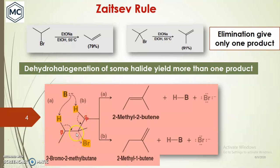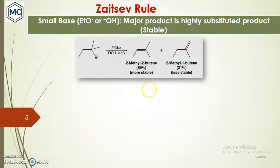In the example of 2-bromo-2-methylbutane, there are two types of beta hydrogen: primary beta hydrogen and secondary beta hydrogen. Elimination of the primary beta hydrogen with HBr forms 2-methyl-1-butene, and elimination of the secondary beta hydrogen forms another product. In such cases, when using small bases, the major product will be the more highly substituted alkene — here, 2-methyl-2-butene is more stable and is the major product.